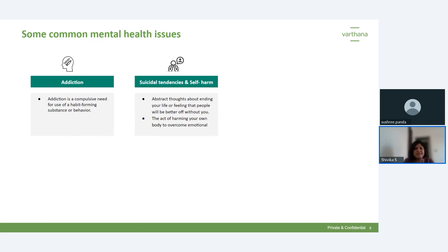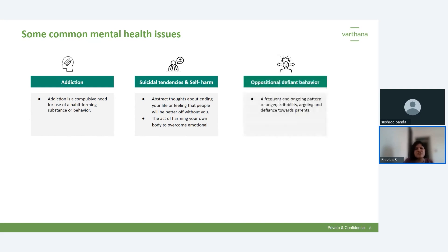Oppositional Defiant Behavior is quite common in the Indian context but often ignored. Sometimes we assume a kid is just moody or spoiled because they show anger, irritability, or argue unnecessarily. But it is also a form of mental health issue. A kid doesn't know how to express emotions, so they take them out in different forms. If you help them learn to cope with emotions better, you would not see as many of these mental health issues occurring.